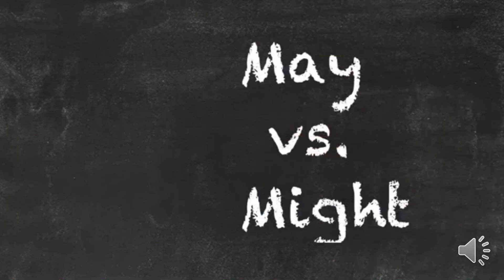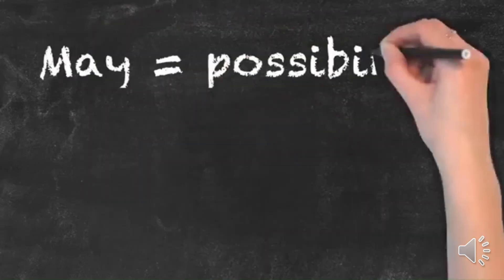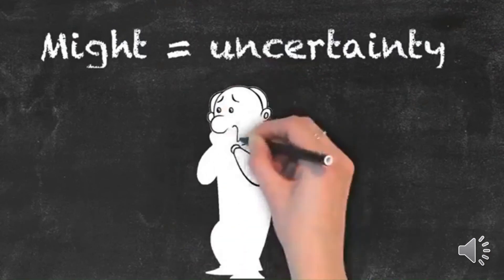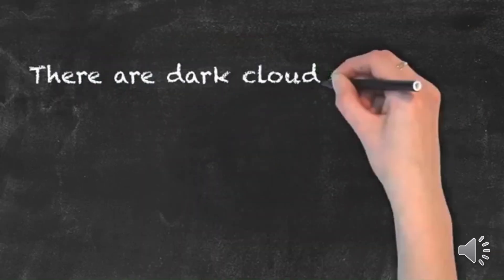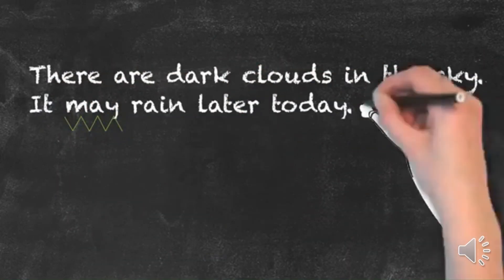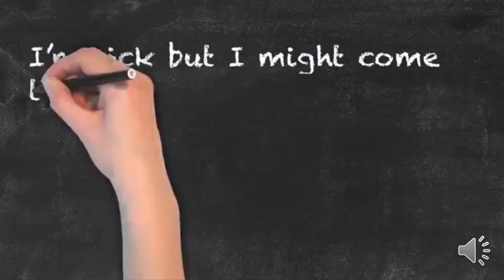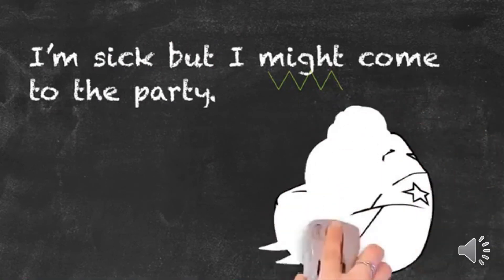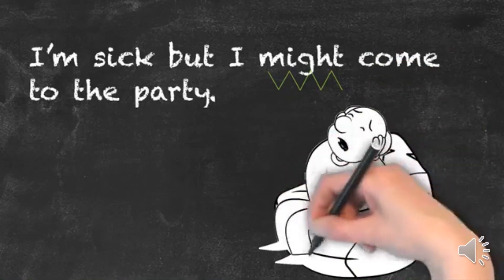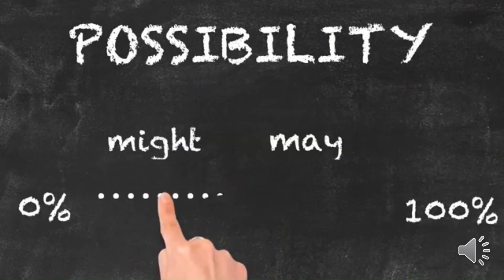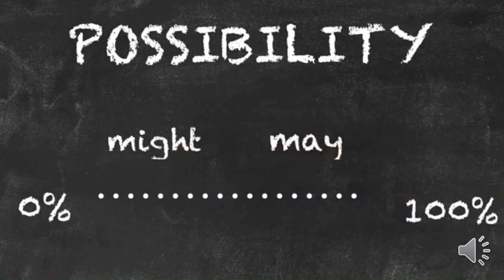May and might — contrary to popular belief, they are not interchangeable as they have slightly different meanings. May refers to a possibility, while might conveys more uncertainty. For example: 'There are dark clouds in the sky — it may rain later today.' The dark clouds indicate a clear possibility of rain. Another example: 'I'm sick, but I might come to the party.' Here the speaker is uncertain about attending, so there is only a slight chance. Always look at the context and choose the right word based on the level of possibility. That's it for today — see you next time!